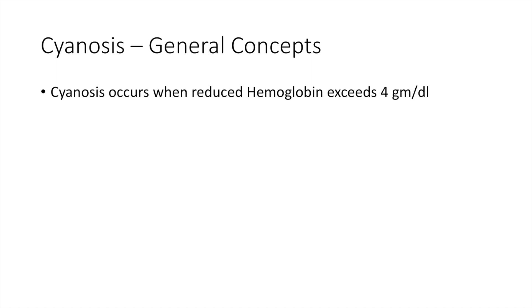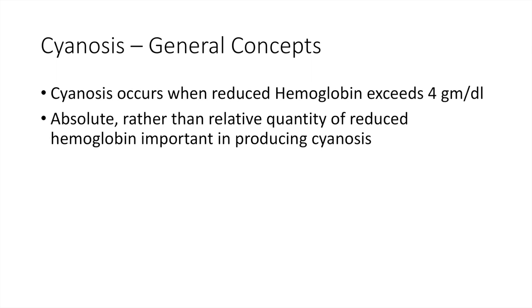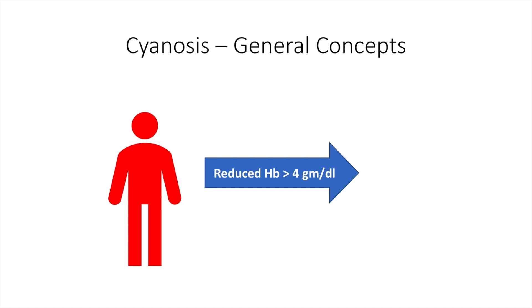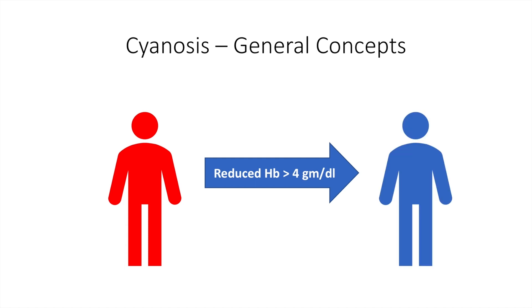As mentioned, cyanosis is bluish discoloration due to development of reduced hemoglobin more than 4 grams per deciliter, and an absolute rather than relative quantity of reduced hemoglobin is important in producing cyanosis. This means that if a patient's hemoglobin is 15 grams per deciliter, when he develops reduced hemoglobin more than 4 grams per deciliter — due to whatever reason, as we will see later — he develops cyanosis.